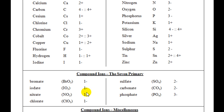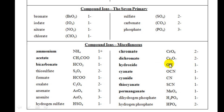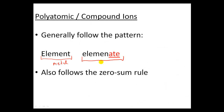Now it won't always end with -ATE. If you look at some of the compound ions, some of them end with -IUM — ammonium, for instance. Acetate is fine, bicarbonate is fine, chromate, dichromate. Hydroxide is another one you would see very often, so that ends in -IDE. You just have to remember that hydroxide is a compound ion — it's one of the miscellaneous ones. But in general, most of them do end with -ATE, and as soon as you see -ATE, remember that it is a compound ion and not a single element.